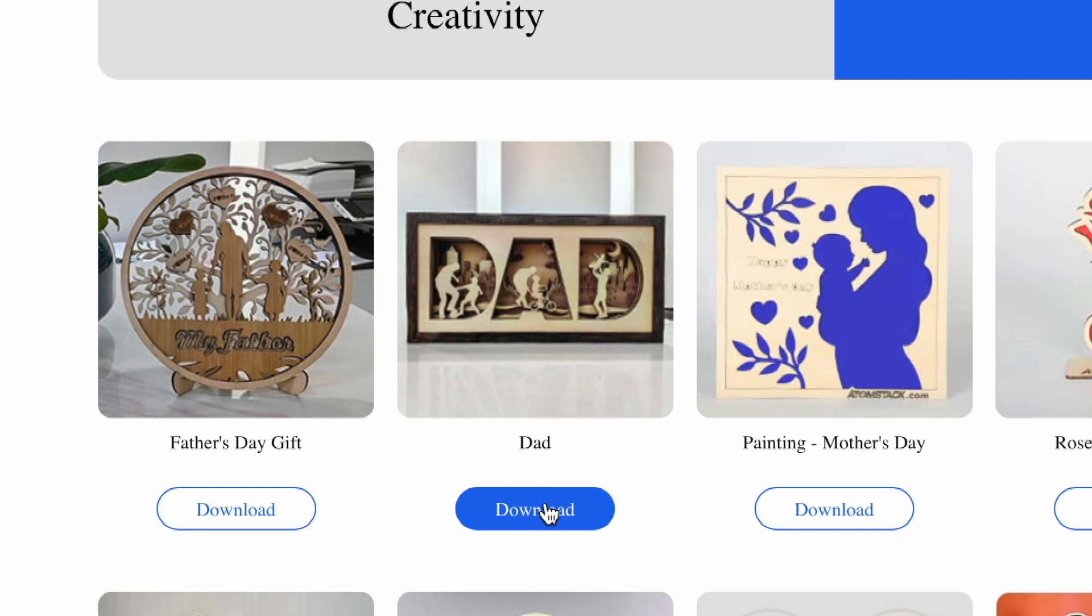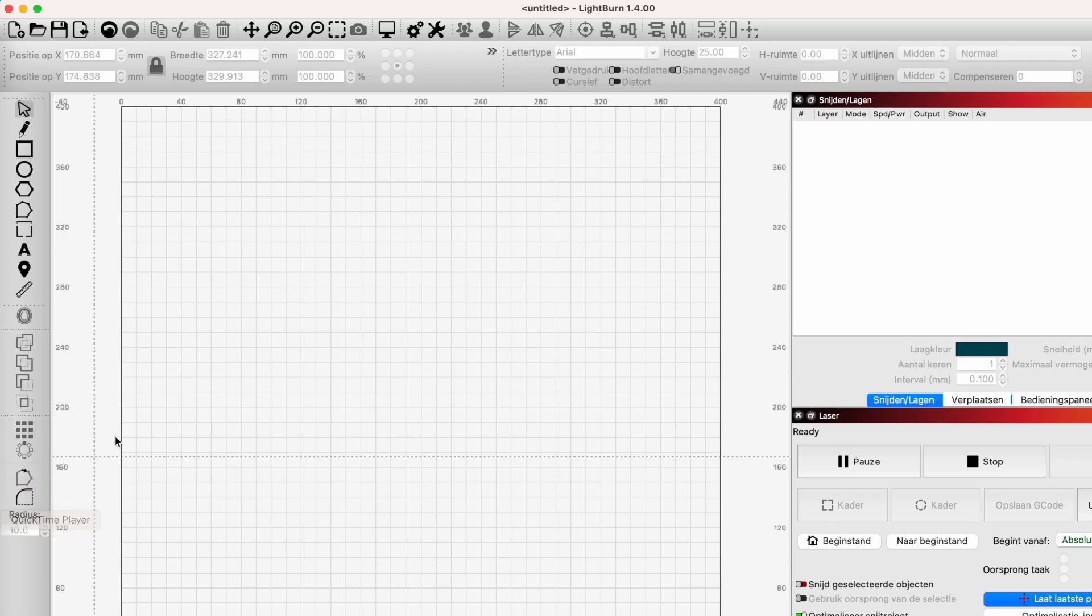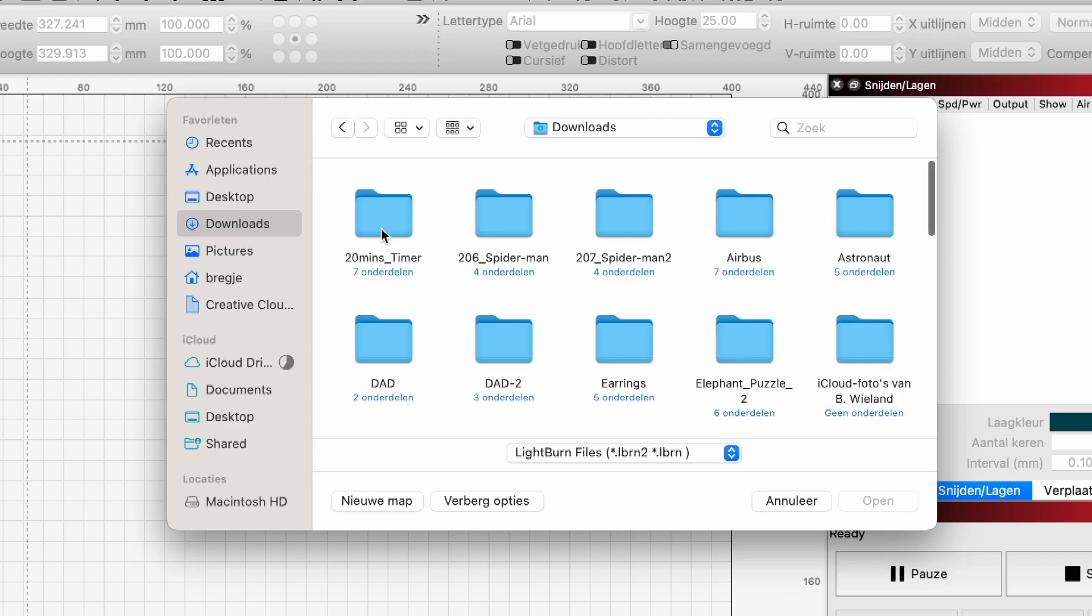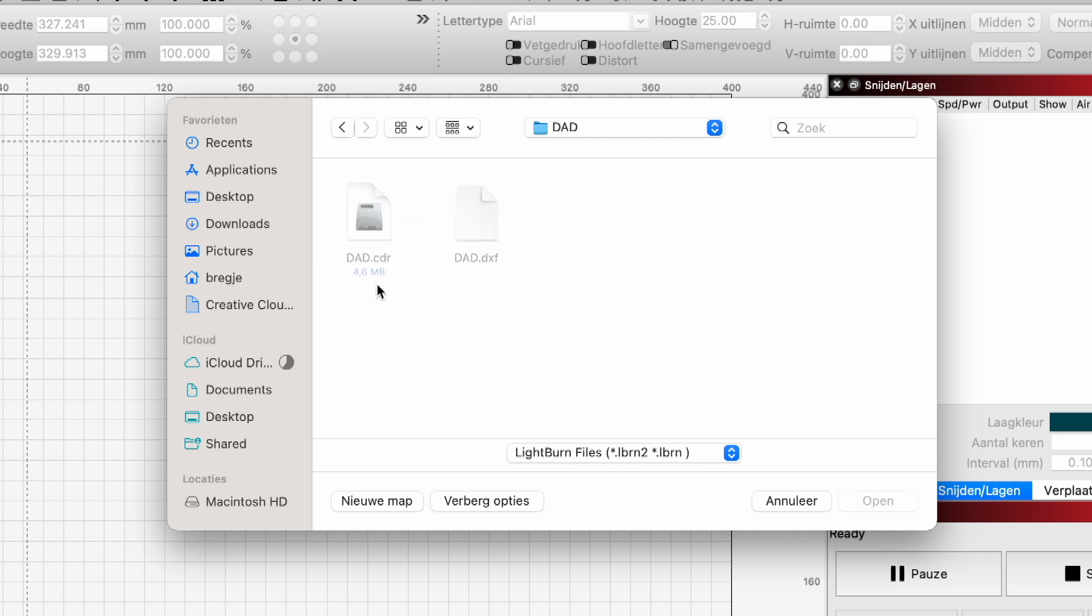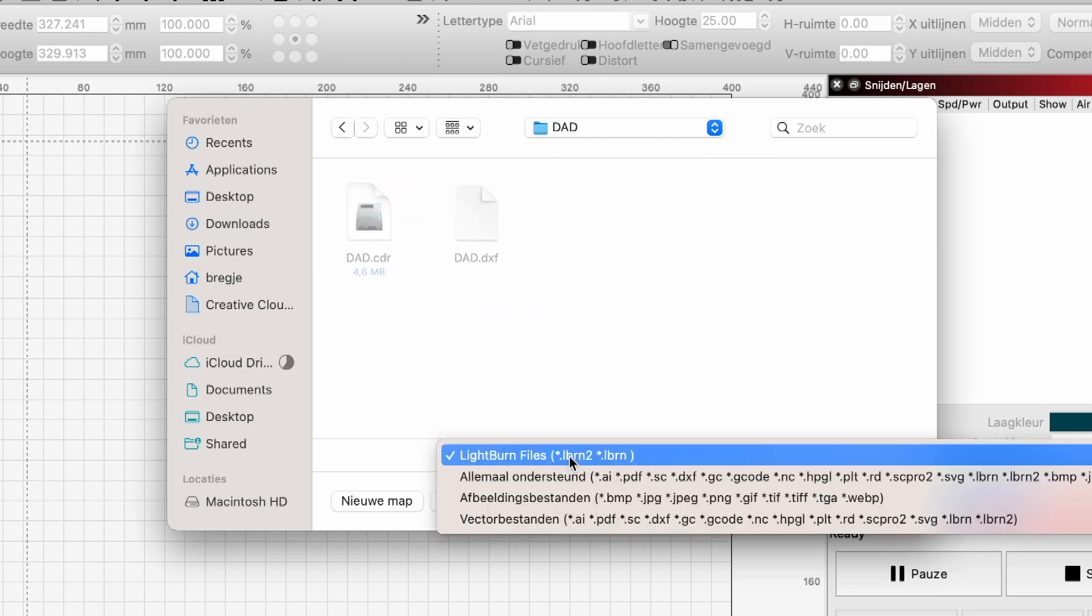Then you can open Lightburn and as you can see I have my settings here. This is exactly the engraveable surface of the engraving machine. So as long as I stay in this square space here, then everything should be fine. I am going to open the design I just downloaded.